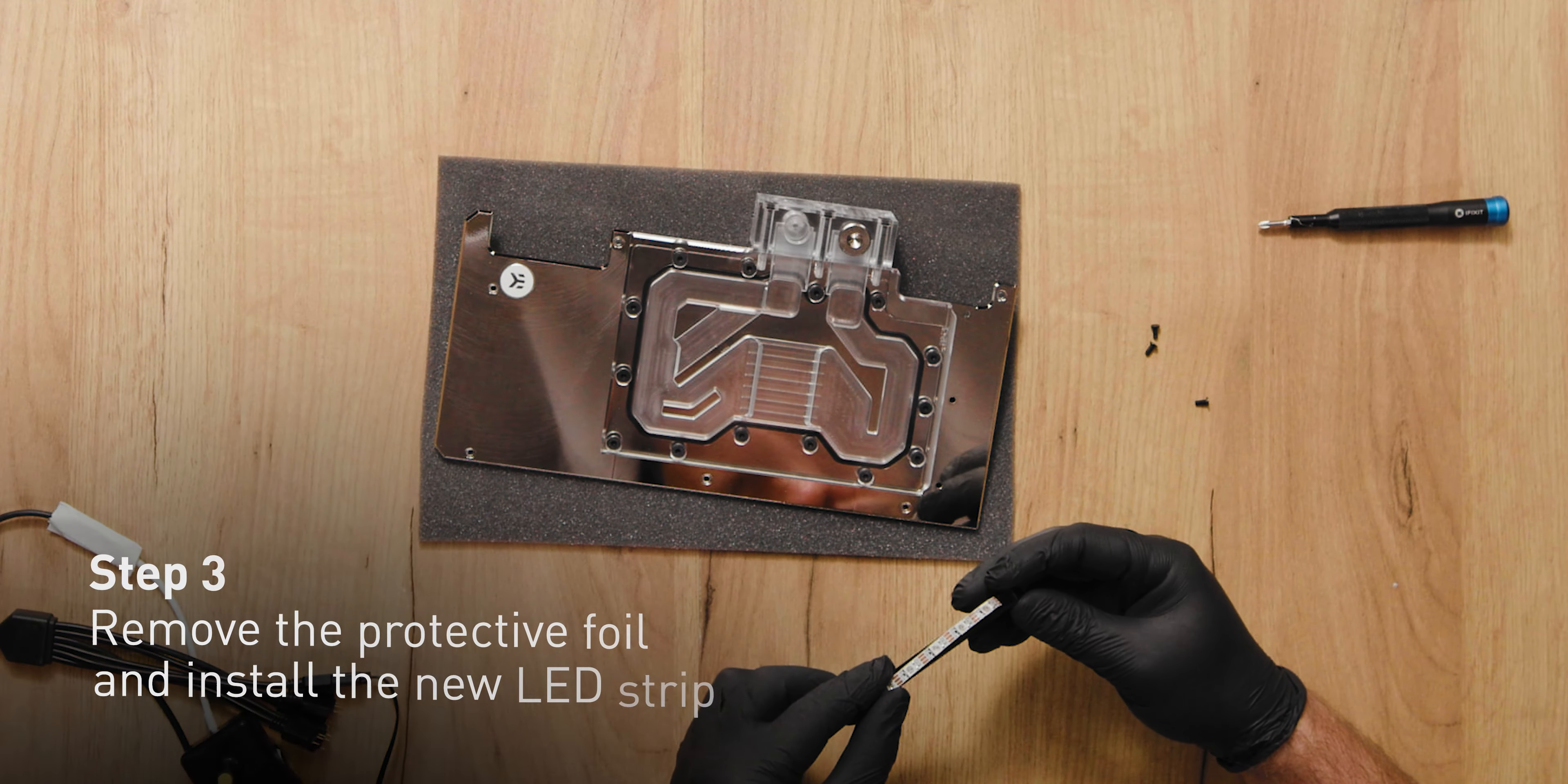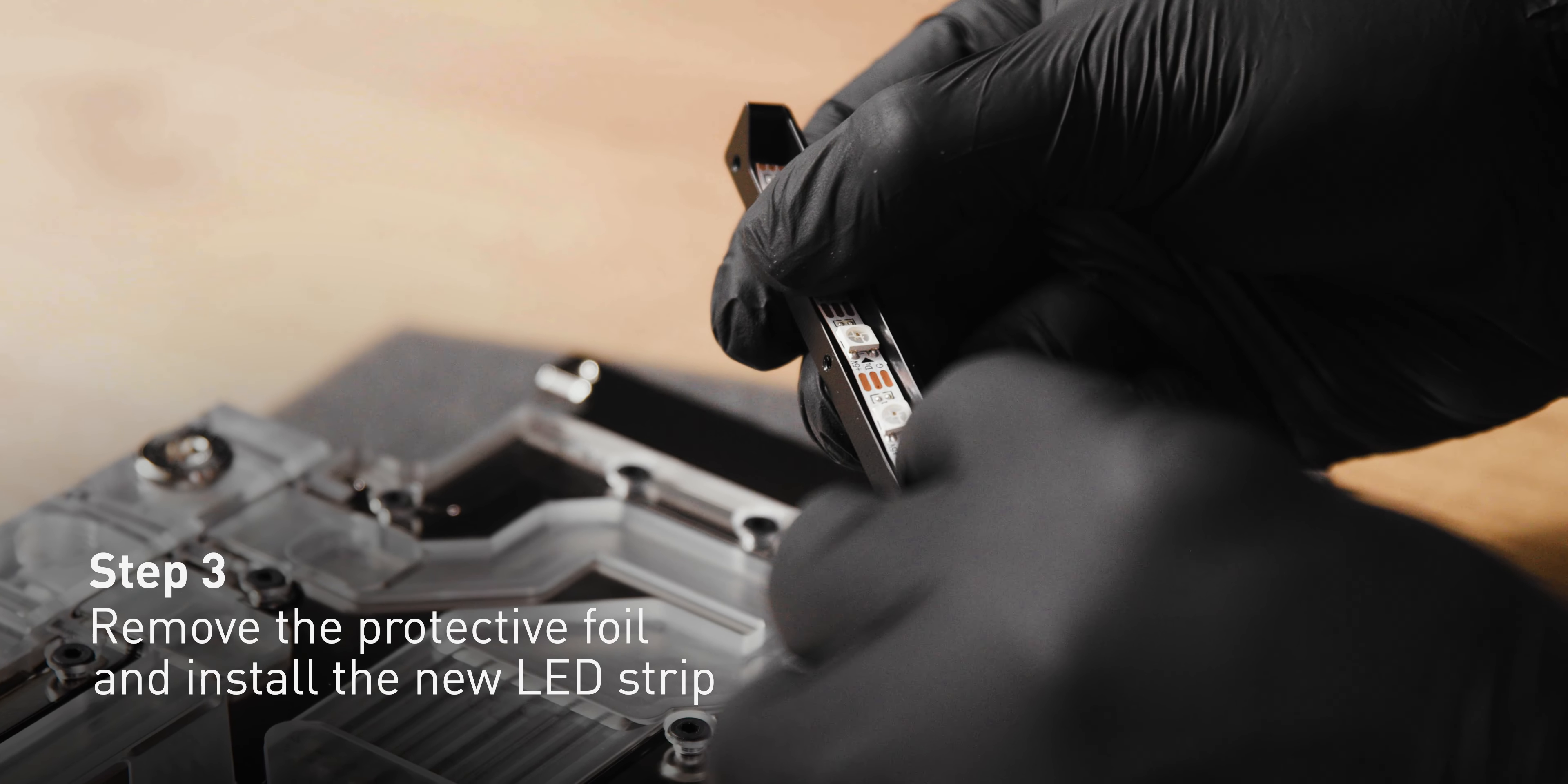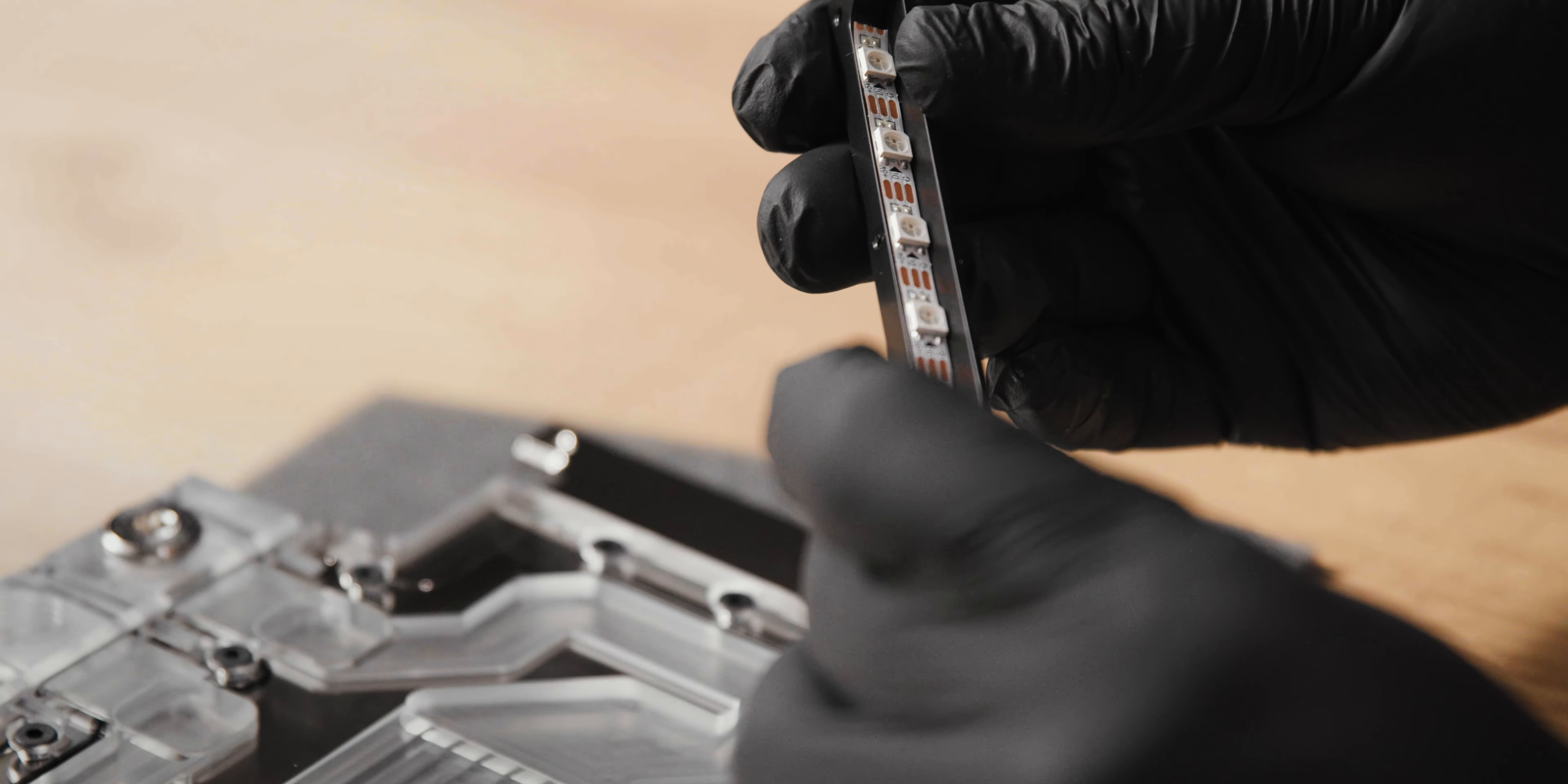Step 3. Remove the protective foil on the sticky part of the new LED strip and place it inside the groove. Make sure to press it down firmly. If the replacement LED strip is too long, cut it to length at the marked spots.